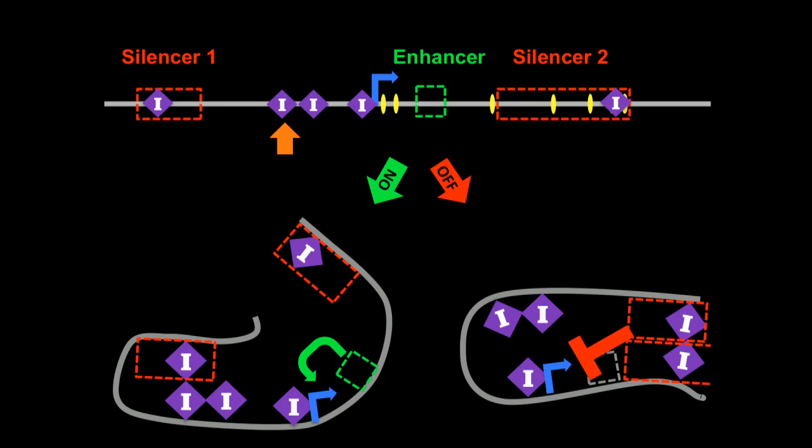And one of our favorite hypotheses in the lab is that these insulators interact to form different looping conformations that determine the spineless expression state. So it's possible that by Clue binding to this site, it disrupts insulator function and biases this looping conformation towards the off state.